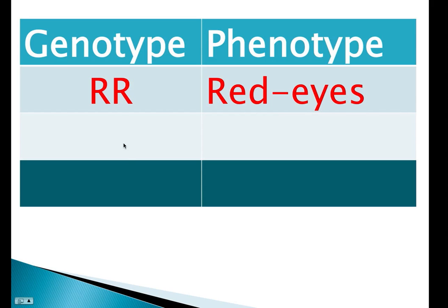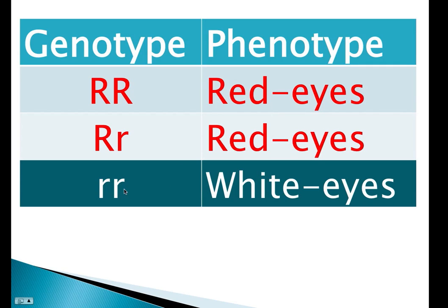So when we look at the possibilities of pairings, of course we can have big R, big R, which is red-eyed. You can have big R, little r, which is also red-eyed. And we can have two little r's, two recessive genes, which is the way you get white-eyed fruit flies.